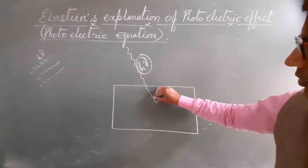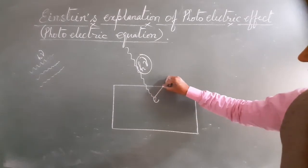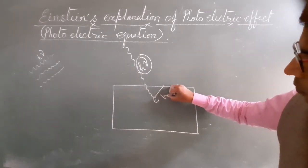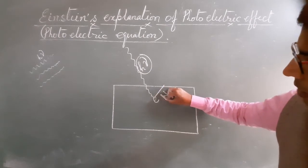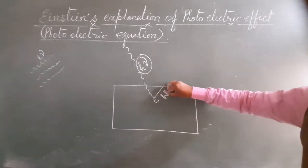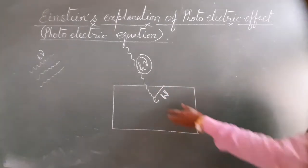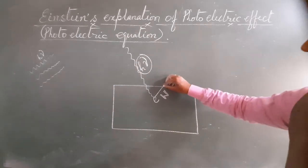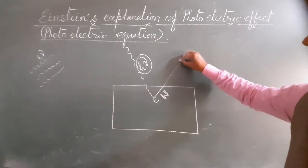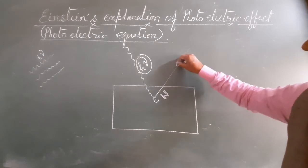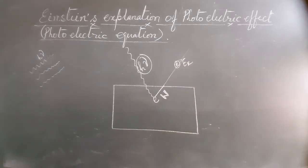First, in coming out from the metallic surface and this energy is called work function. The minimum amount of energy required for the emission of electron from the metallic surface is called work function. And the rest energy will be used by the electron in the form of its kinetic energy.